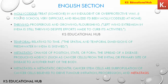Now for important vocabulary words from the newspapers. The first word is 'mollycoddled' — it means to treat someone in an indulgent or overprotective way. Example: 'I found school very difficult and realized I had been mollycoddled at home.' The next word is 'thriving' — it means prosperous and growing, flourishing. Example: 'Left-wing extremism in India is still thriving despite efforts made to curb its activities.'